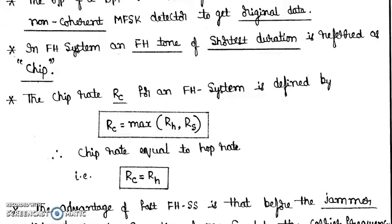Now in this case what happens? In FH system an FH tone of shortest duration is referred to as chip. Here the chip rate RC is given by the formula max of RH, RS. So here the chip rate is equal to hop rate because in case of your fast frequency hopping hop rate is greater than your symbol rate. So RC becomes equals to RH.